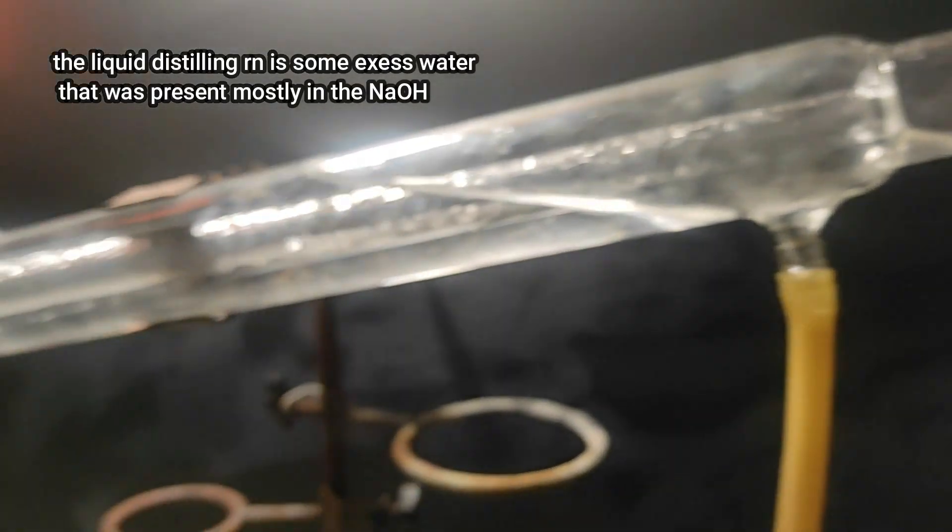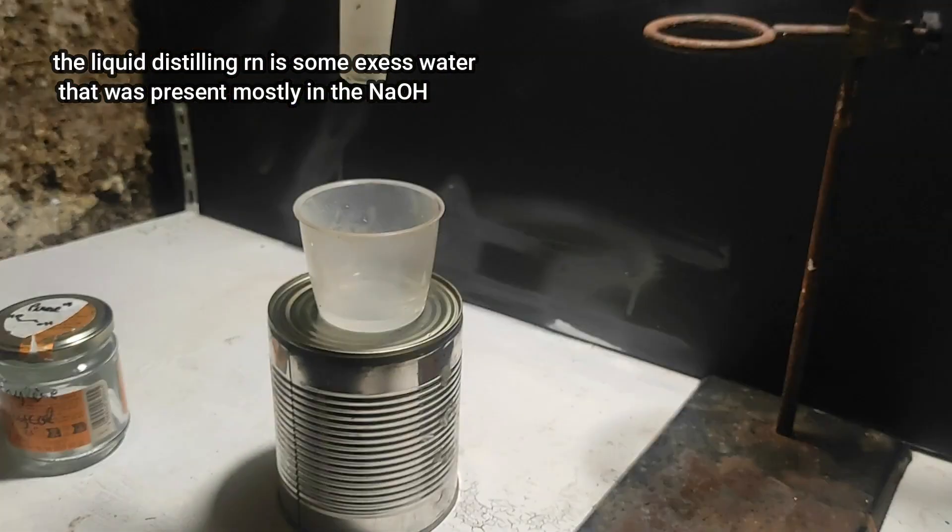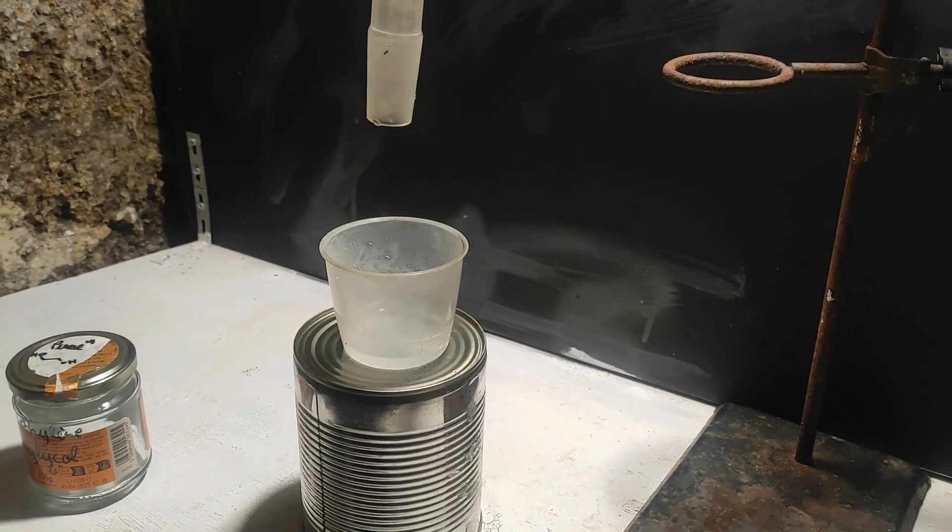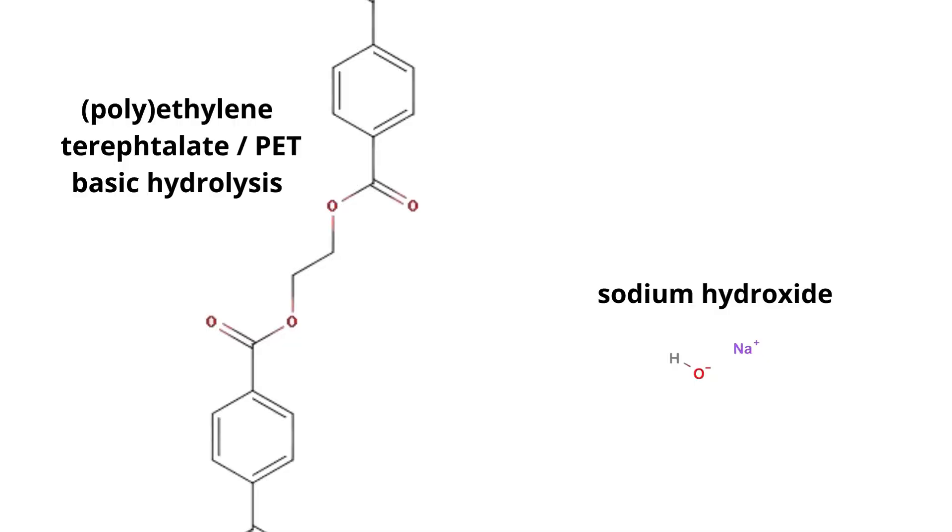So regardless, we keep the reflux for multiple hours, and while this is going, let me explain what is happening in the reaction. Here is a piece of the PET polymer, and as you can see, it's made out of terephthalate diesters with ethylene units. And in this reaction, we will break the ester bonds.